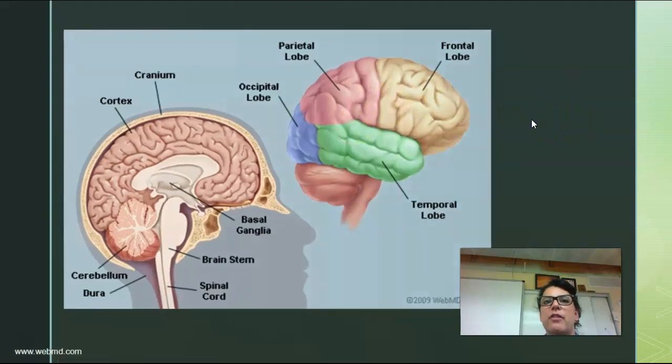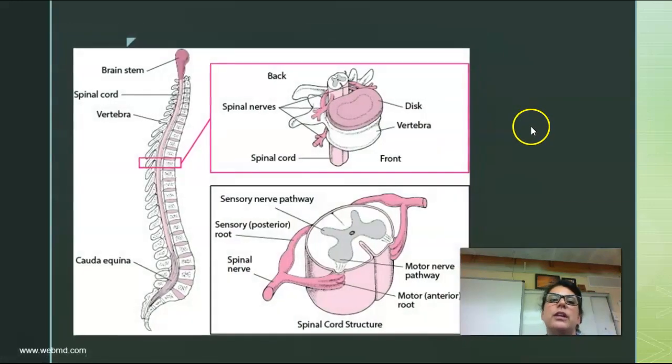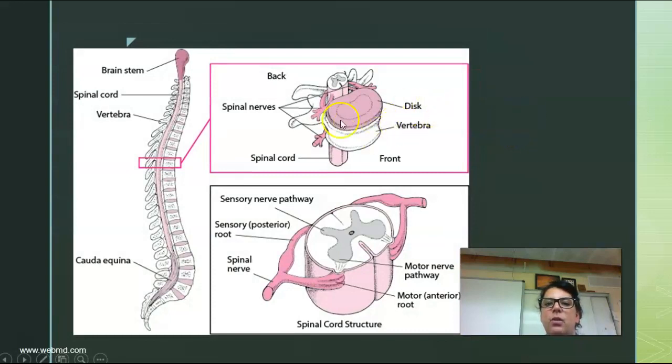You will look at the 12 pairs of cranial nerves and the spinal cord. How is the spinal cord organized? How is the tissue arranged? What does it do?